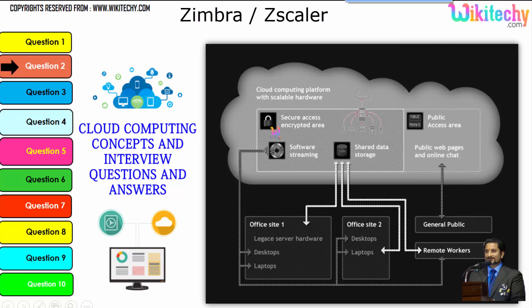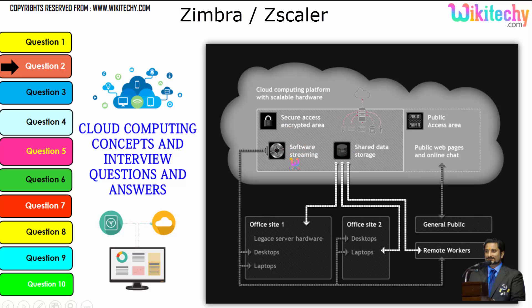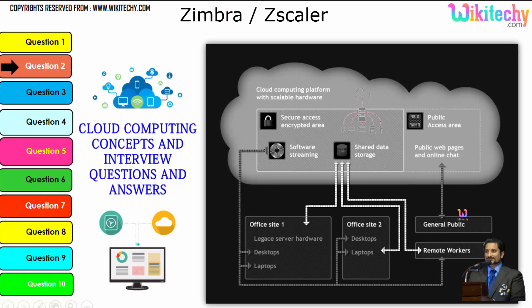In cloud computing you can see there is a public access area with public web pages for end users. Apart from this, there is secure data access, shared data storage, and software streaming. Companies can use it as a private environment, and the public can use it to access web pages and websites. This is how cloud computing works.